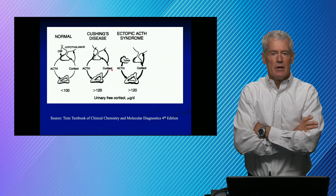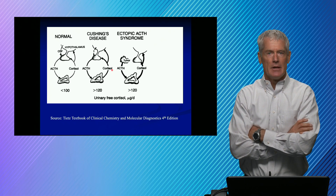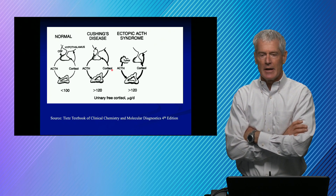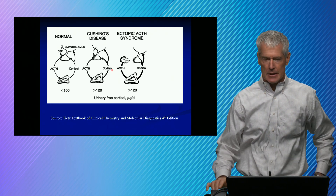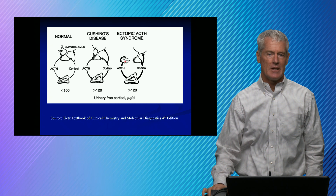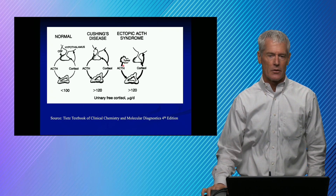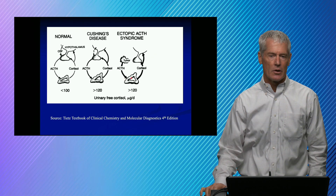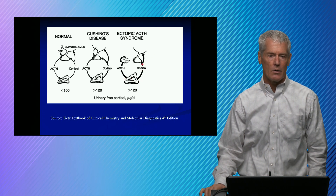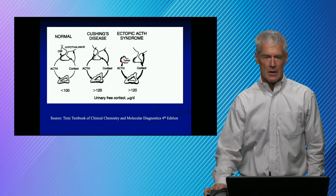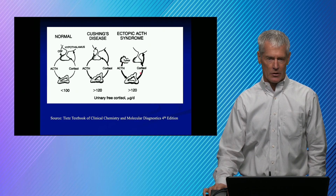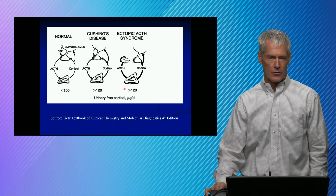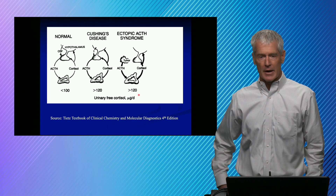You can also have ectopic secretion of ACTH — oat cell carcinoma of the lung is one example. These are neuroendocrine tumors secreting ACTH. The ACTH acts on the adrenal gland, which produces a lot of cortisol. The cortisol may feed back at the pituitary and hypothalamus, but it has no effect on the tumor. In this case, we're going to have an increase of ACTH, an increase of cortisol, and urinary free cortisol greater than 120 micrograms per day.